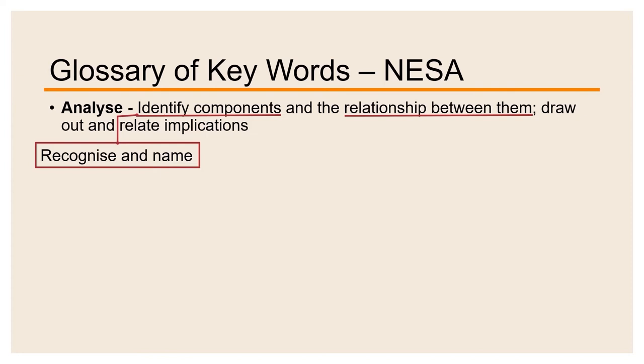But then finally, we have to be able to draw out and relate implications. Implications is another word for meaning and ideas. Once we have identified the components and considered the relationship between them, we have to be able to discuss and explain how do those components work together to communicate meaning and ideas. And that is the basic process of analysis.